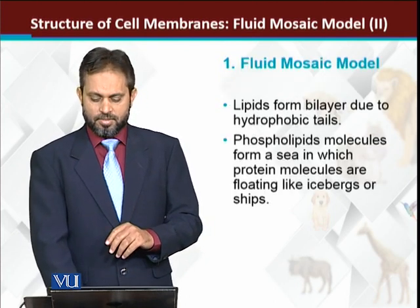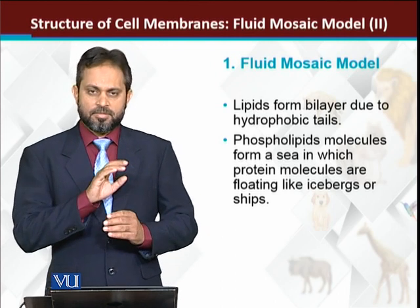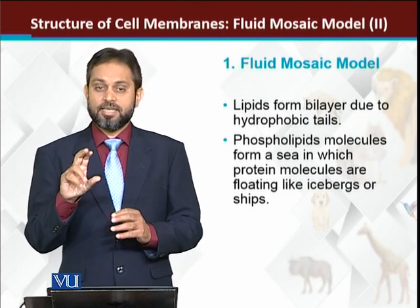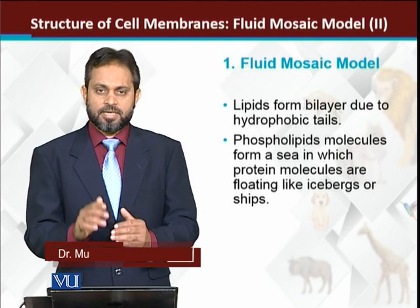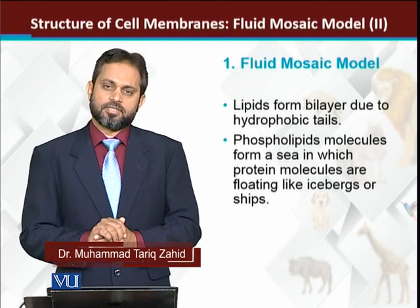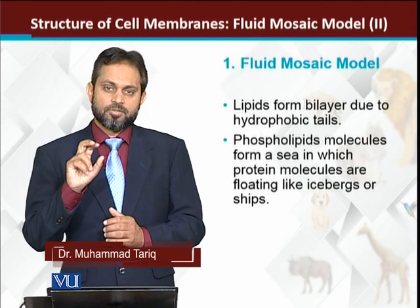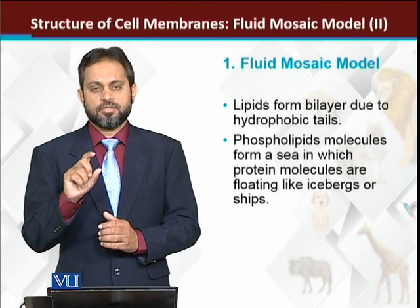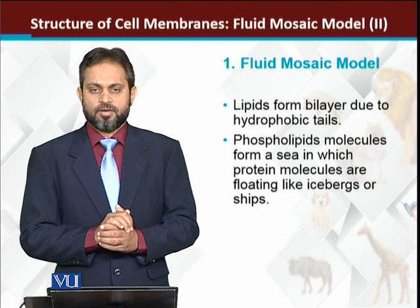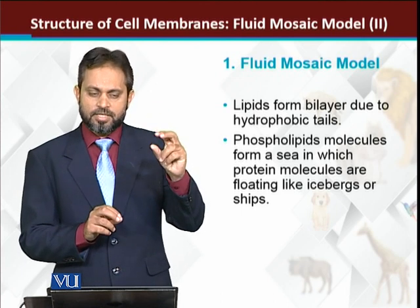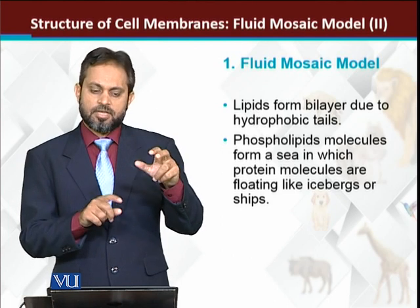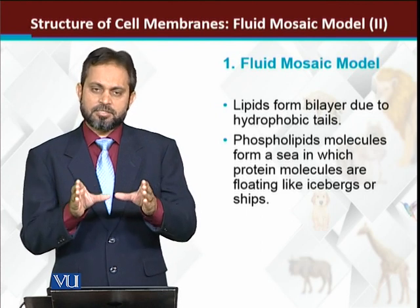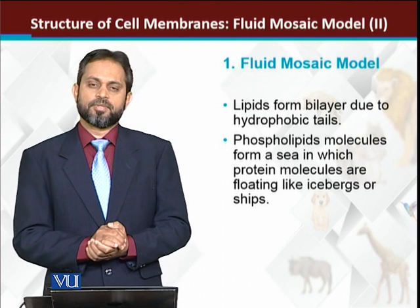Actual cell membranes, or plasma membranes, are made up of lipid bilayers. Why are they in a bilayer form? Basically, this is due to the hydrophobic ends of phospholipid molecules. The head of a phospholipid is hydrophilic, while the tail is hydrophobic. To protect hydrophobic tails from water molecules, lipids arrange into two layers so that the tails come in the middle — that is why we have a lipid bilayer.